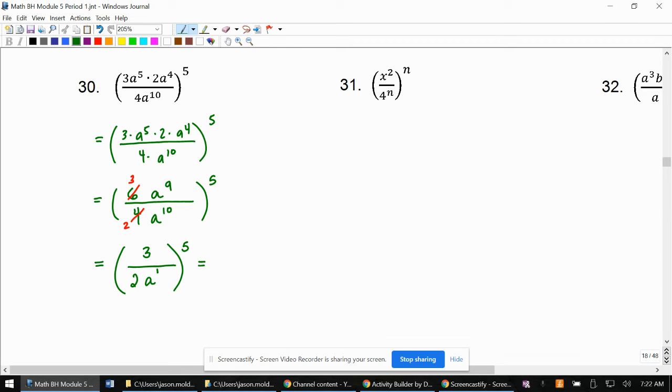All right. Last thing we need to do is we now need to apply this 5 to each part of this fraction. And actually, each one of these has an exponent 1. By the way, since 3 over 2 is fully simplified, when I raise these each to a fifth power, I know that this is also going to be fully simplified